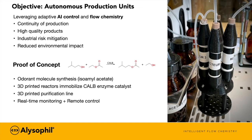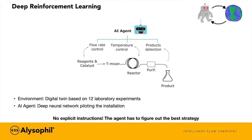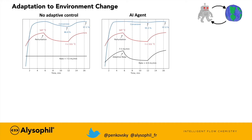We have provided real-time monitoring and remote control. To study autonomous piloting feasibility, we use deep reinforcement learning. The agent interacts with the environment and receives rewards for every action. Our AI agent is able to observe product conversion while controlling flow rate and reactor temperature. We have built an environment which is a digital twin based on laboratory experiments. Our agent receives no explicit instruction; it has to figure out the best strategy on its own. First, we fix the desired thermostat temperature and flow rate with no adaptive control. Therefore, as the reactor cools down, the reaction conversion also drops. When we inspect how the adaptive agent responds to the change in environment—when the reactor cools down—it adapts the flow rate and the conversion remains intact.